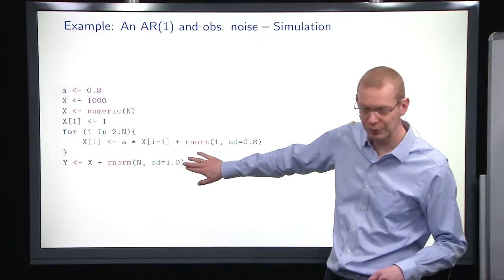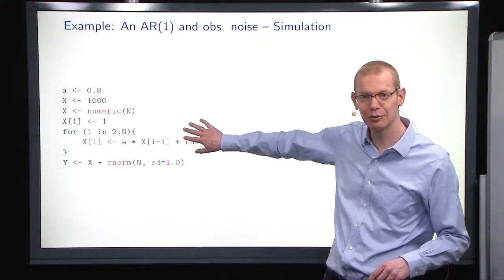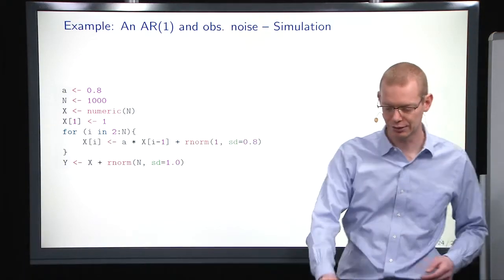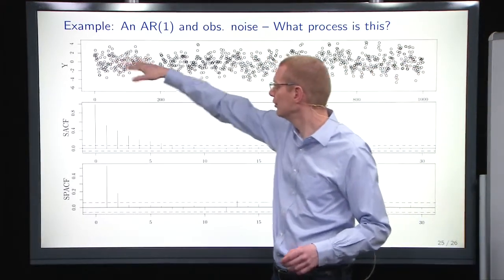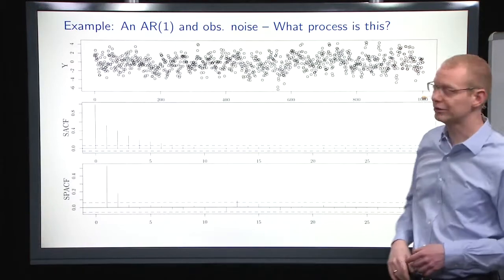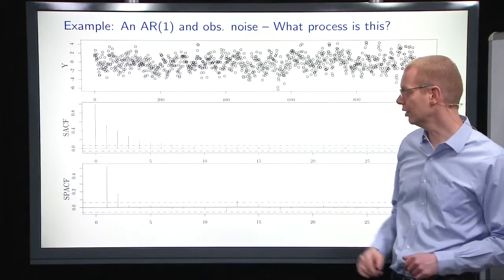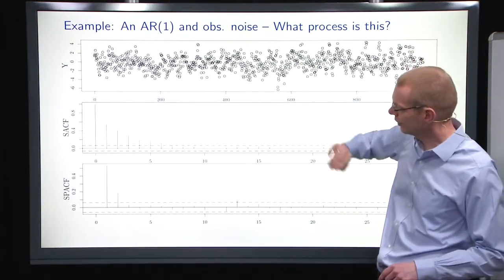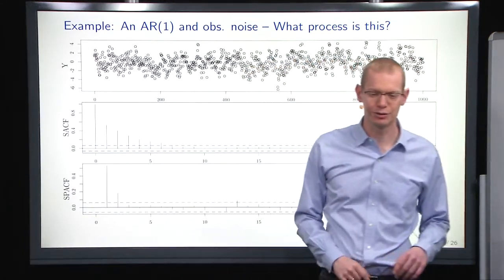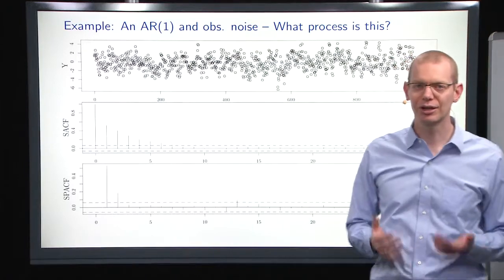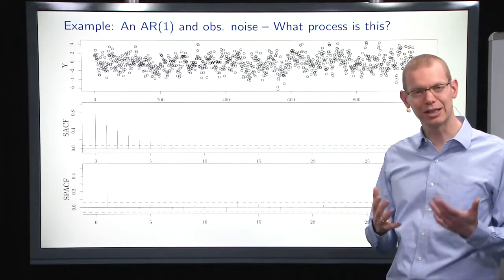and then what we do is that we add observation noise after we simulate the process. So there's no feedback in this model. At the top here, we have the data and we see that the process seems to be stationary. It oscillates a lot of noise. So what has been done here is to calculate the sample autocorrelation and the sample partial autocorrelation function. And the question is now, can you identify which model is actually being used here?